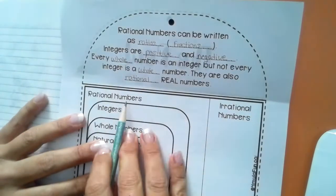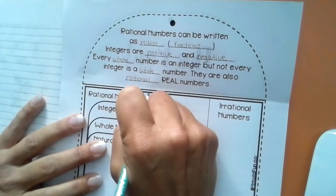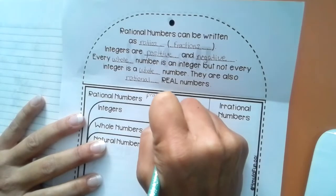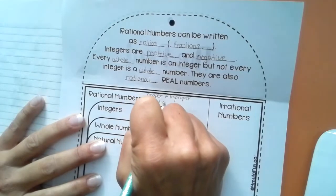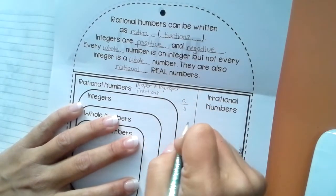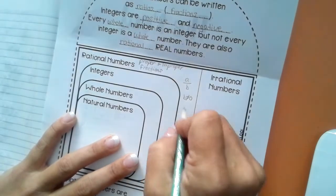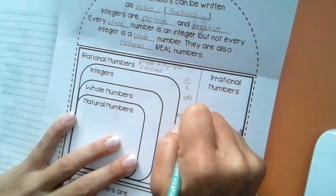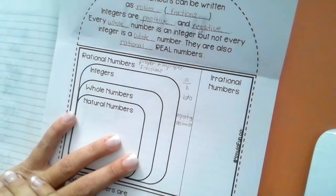So some examples of rational numbers are proper and improper fractions. So a over b where b does not equal zero and repeating decimals. So decimals that repeat, repeating decimals. These are examples of rational numbers.